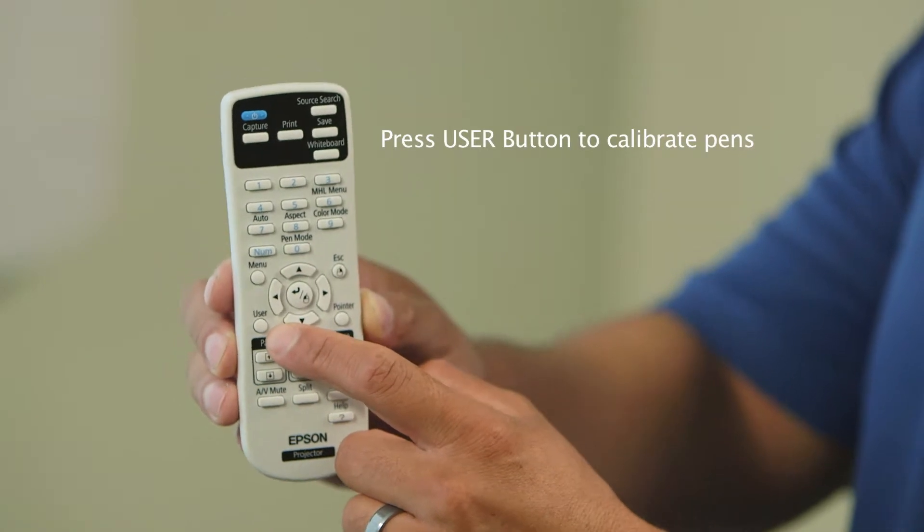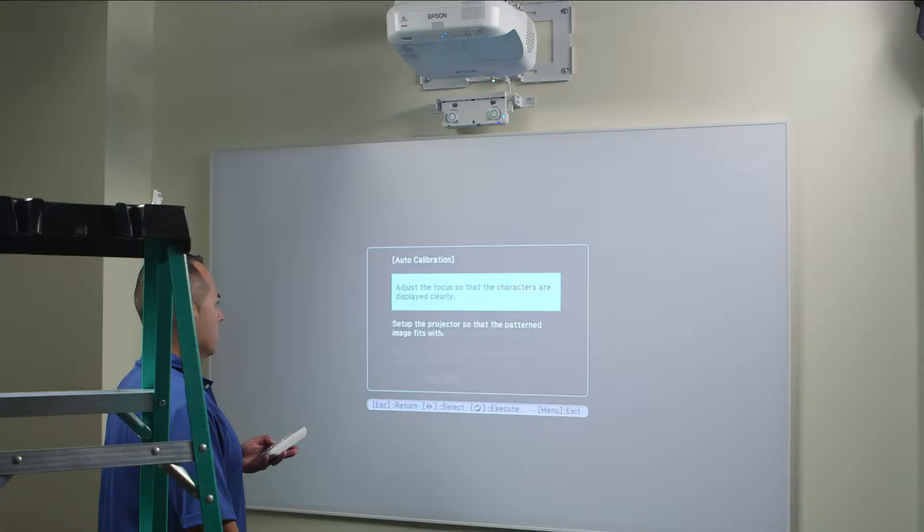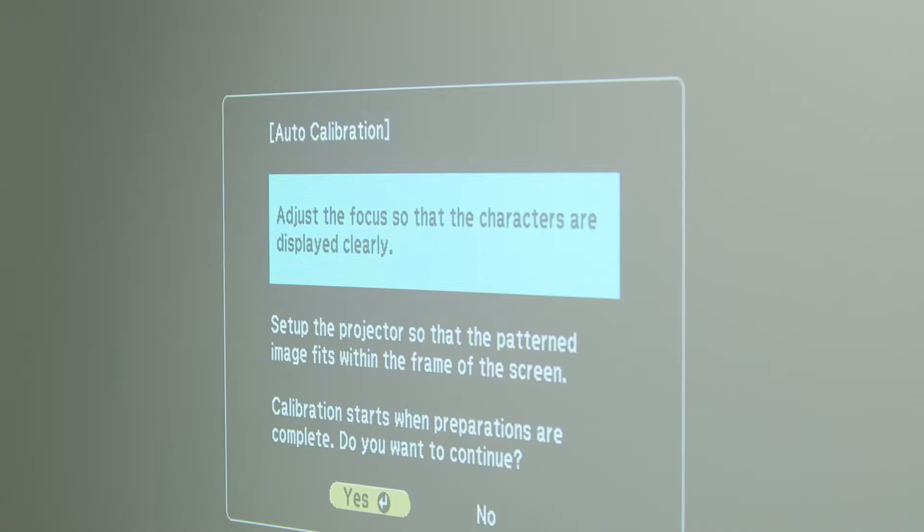To calibrate the pens, press the User button on the remote control and select Auto Calibration and Yes. Allow about 15 seconds for the pen calibration to complete.